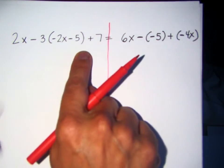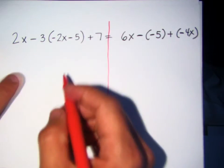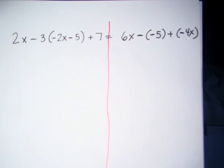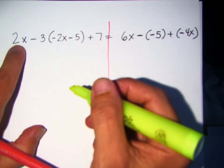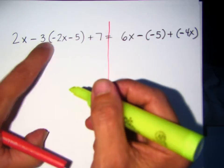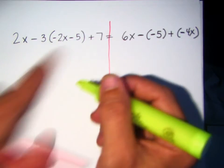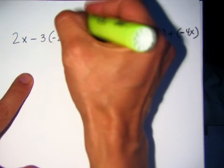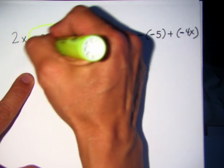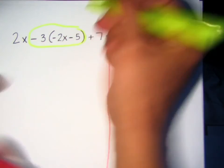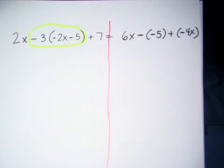And what am I going to look for? I'm going to look for a distributive property. And where do I see it? Negative 3 times — yeah, that's it, so all this is a distributive property. So I'm going to go ahead and circle negative 3 times negative 2x minus 5. All right, so far so good?